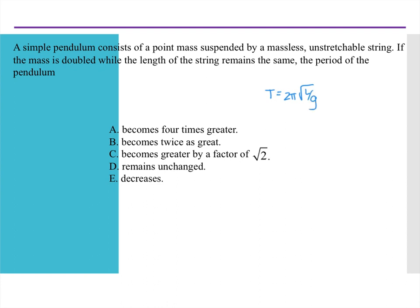This question is about the period of a pendulum. It asks, what happens if I keep the length of the string the same, but I double the mass? And I look at my expression for the period, and I notice it does not depend on mass, which means that the period won't change.